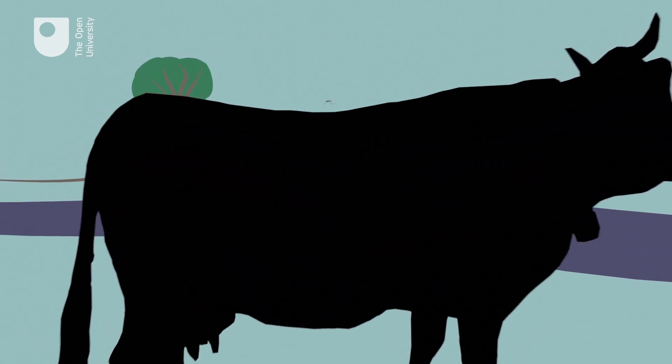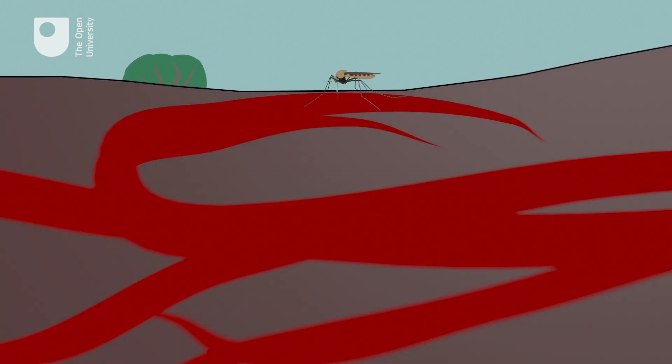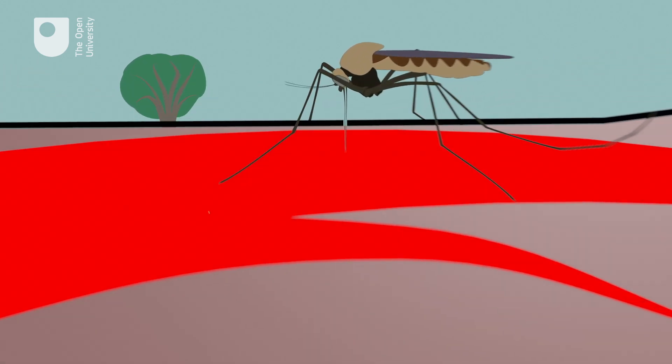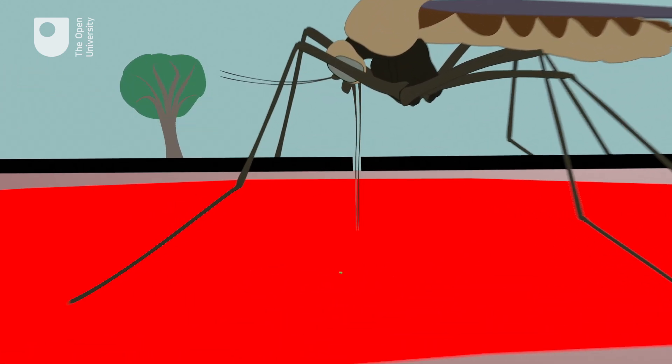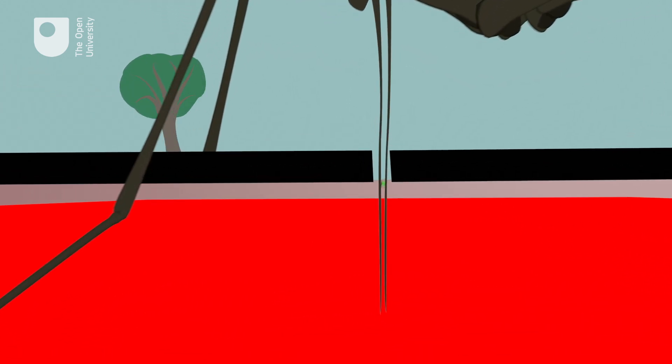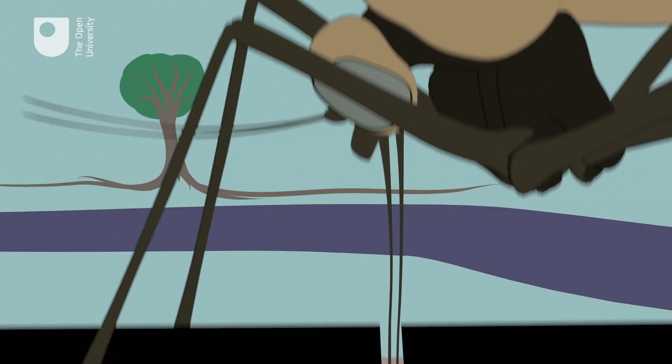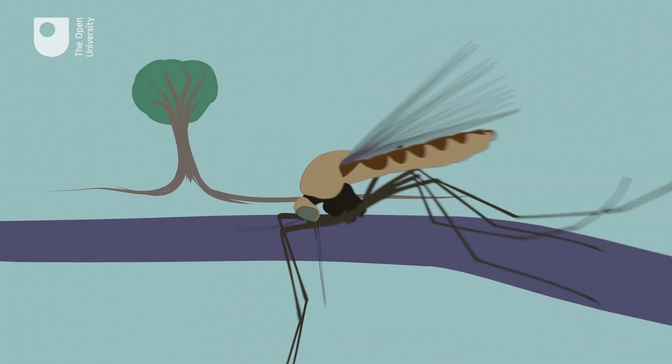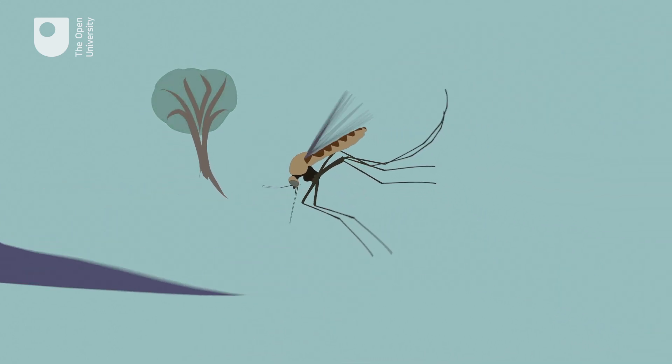The mosquito bites an infected animal, such as a cow, and becomes a carrier of the malaria pathogen. At this point, the mosquito is referred to as a vector.